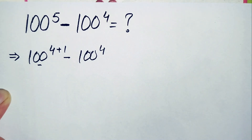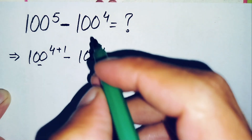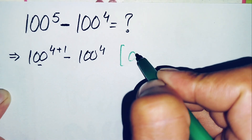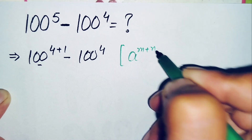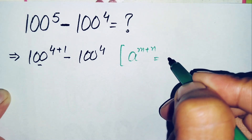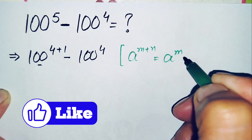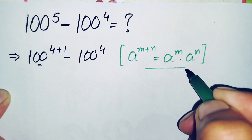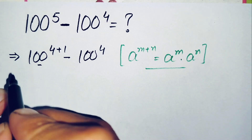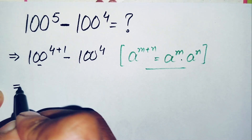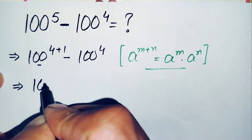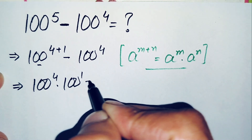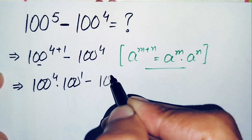Here in the first term we will use the exponential math property a raised to the power m plus n, which can also be written as a raised to power m times a raised to power n. Using this property, the equation becomes 100 raised to power 4 times 100 raised to power 1, minus 100 raised to power 4.